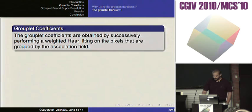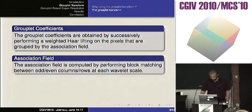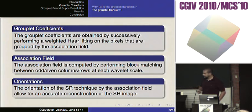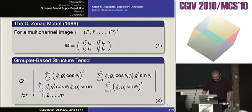The coefficients of this transform are obtained by successively performing a weighted hard transform on pixels grouped by the association field. The association field is computed by performing block matching between odd and even columns and rows at each wavelet scale. The orientation of the super-resolution technique is constrained by the association field in order to have an accurate reconstruction. This is the Dissanzo model for multi-channel images, and this is the grouplet-based structure tensor used in this paper.